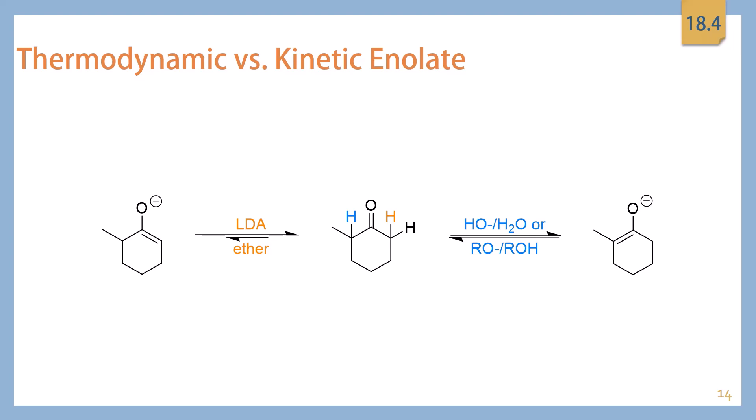So far, all of the enols and enolates we've looked at have been formed from either symmetric ketones or from aldehydes where there was only one type of alpha hydrogen, so we never had to worry about which hydrogen to remove. But if you have an asymmetric compound with two different positions of alpha hydrogens, you have to make some decisions, and it ultimately comes down to what conditions you're in — you can either form the thermodynamic enolate or the kinetic enolate.